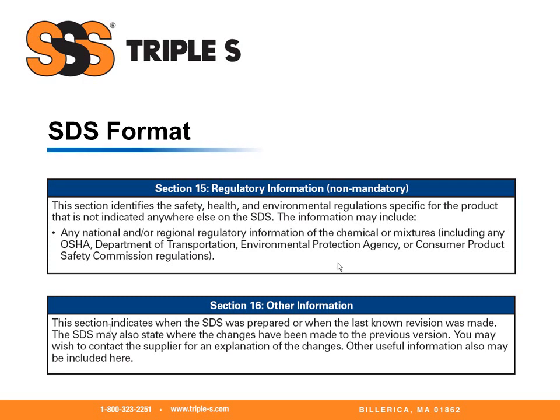Section fifteen, regulatory information. Again, non-mandatory. This section identifies the safety, health, and environmental regulations specific for the product that are not indicated elsewhere on the safety data sheet. The information may include any national or regional regulatory information, which may include EPA SARA 311/312 information, state right-to-know information, or other regulatory lists. Section sixteen, other information. This section indicates when the safety data sheet was prepared or when the last known revision was made. It may also include the responsible party who created it, a revision list, product label, GHS information, information for HMIS or NFPA, and abbreviations or other definitions.